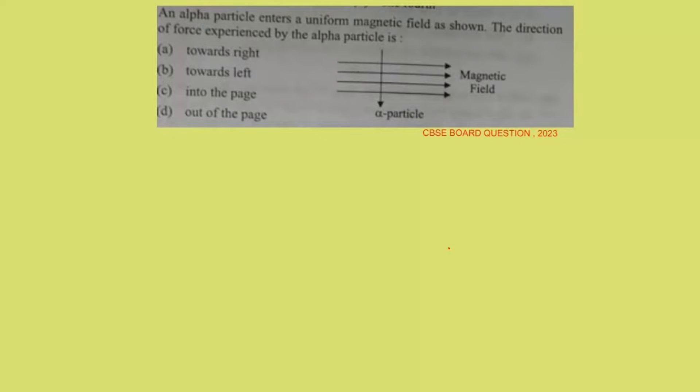The next question: an alpha particle enters a uniform magnetic field as shown. The direction of force experienced by the alpha particle is — towards the right, towards the left, into the page, or out of the page? We will solve this using Fleming's left-hand rule.